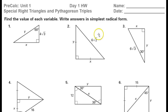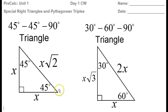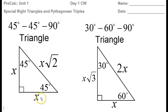We will be solving special right triangles. These are the patterns that we have to memorize. For a 45-45-90 triangle, you have two legs and then the hypotenuse. A 45-45-90 triangle is automatically isosceles, so these two legs are going to be the same. And then the hypotenuse will be the leg times radical 2.